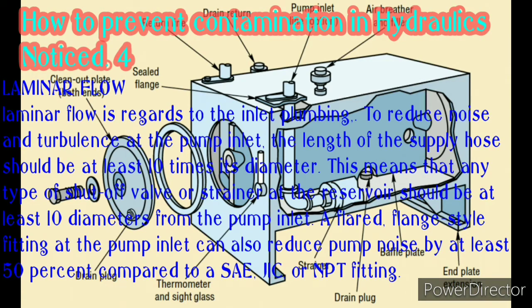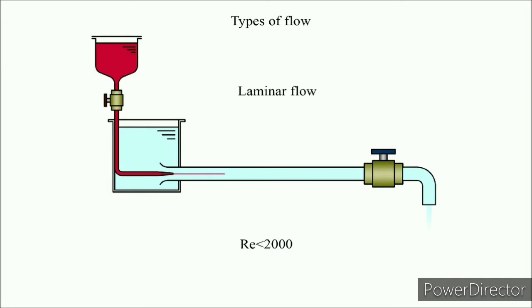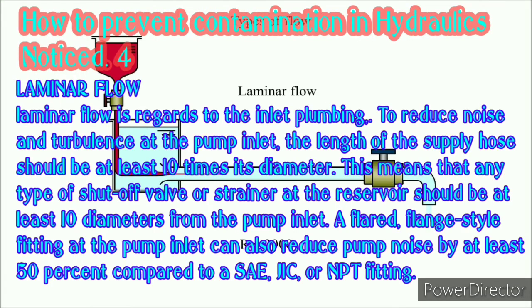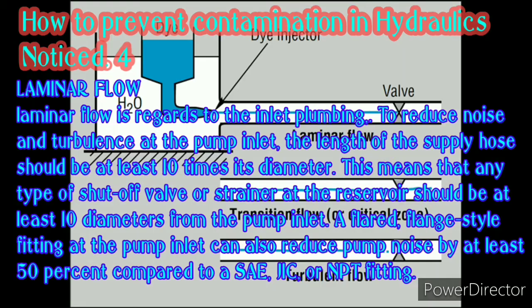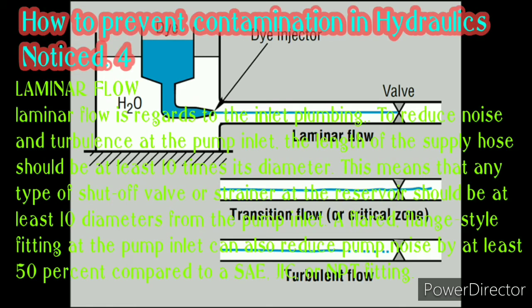Laminar flow, with regard to inlet plumbing: to reduce noise and turbulence at the pump inlet, the length of the supply hose should be at least 10 times its diameter. Any shut-off valve or strainer at the reservoir should be at least 10 diameters from the pump inlet. A flared flange-style fitting at the pump inlet can also reduce pump noise by at least 50% compared to SAE, JIC, or NPT fittings.